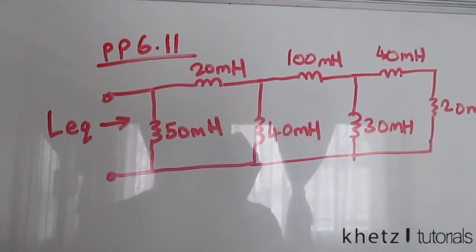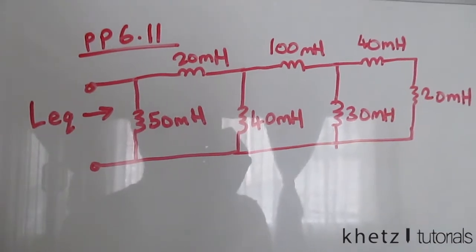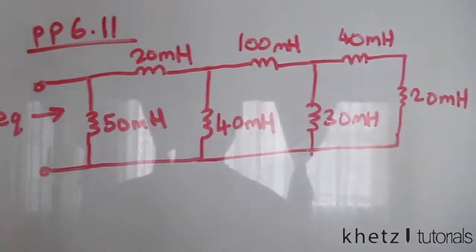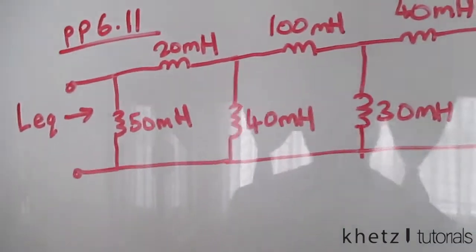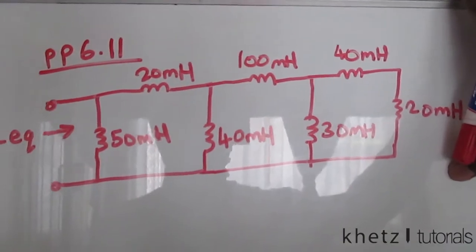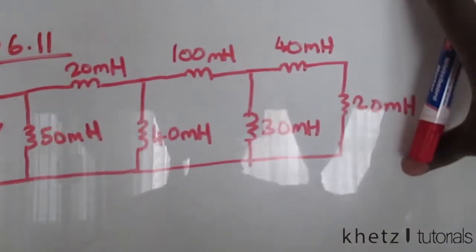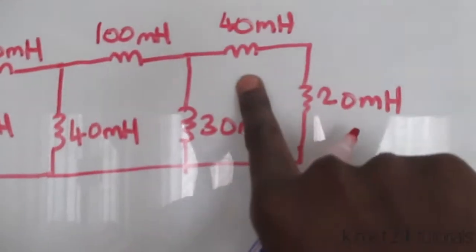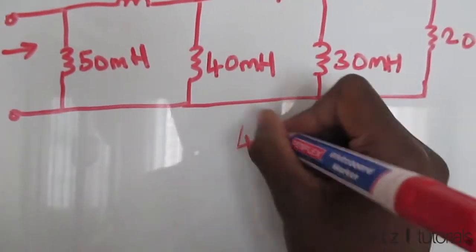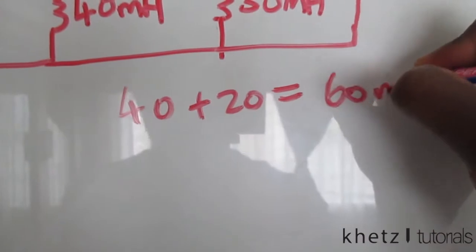Welcome to Catch Tutorials. In this video I'll be covering practice problem 6.11. If you are familiar with combining series and parallel resistors, this should be a simple task, because you basically do the same thing when dealing with inductors. Here we have 40 and 20 millihenries in series, which means the equivalent is 40 plus 20, which is 60 millihenries.